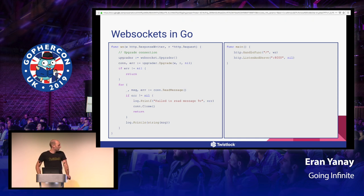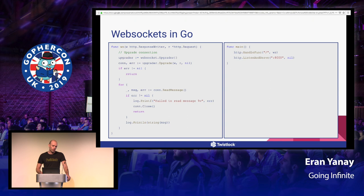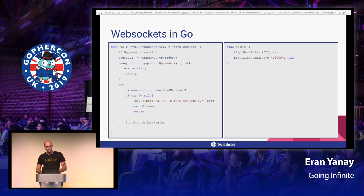On the left, we start with initializing the upgrader interface, which is part of the third-party WebSocket library, and we give it the HTTP request, which in turn will return to us a wrapper to the net.Conn interface in Go, which we can then use to read and write messages from the client. In this example, I'm upgrading the connection, and then repeatedly going to read messages from the client and print them to the standard output.